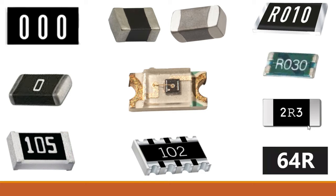This is basically a general purpose or standard resistor with a value of 2.3 ohms. For this one, the value equals 64 ohms. When the 'R' letter is between numbers it means decimal point, but when 'R' appears after the number it means ohms — so this is 64 ohms.